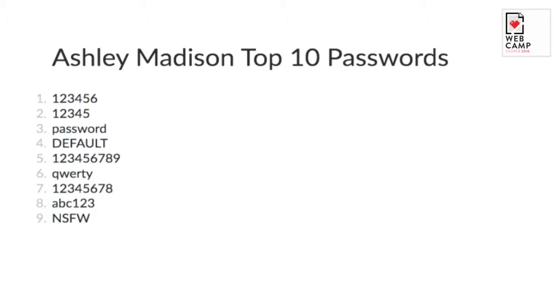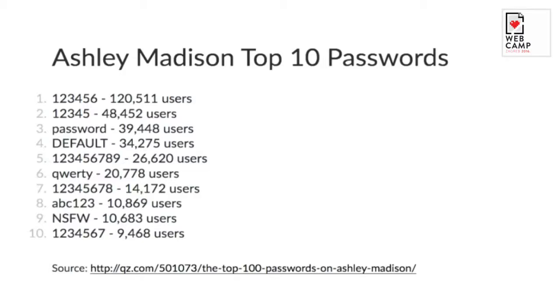Number nine was a character that was NSFW, so I wasn't going to put that on a slide at a nice conference. If you want to find that one out, maybe ask me after a couple of beers. And then finally 1234567 to round out all the numbers. The horrifying thing is that's also a lot of people using those passwords — 120,000 people decided that 123456 was a good password to use on a site that you really should be keeping secret. It's terrifying. Even when you get past number ten, there are still about 9,000 people using a certain password, and they're all easy to guess or dictionary-based ones.